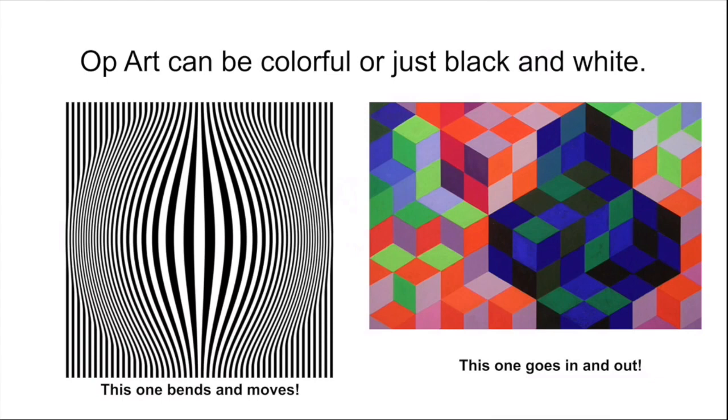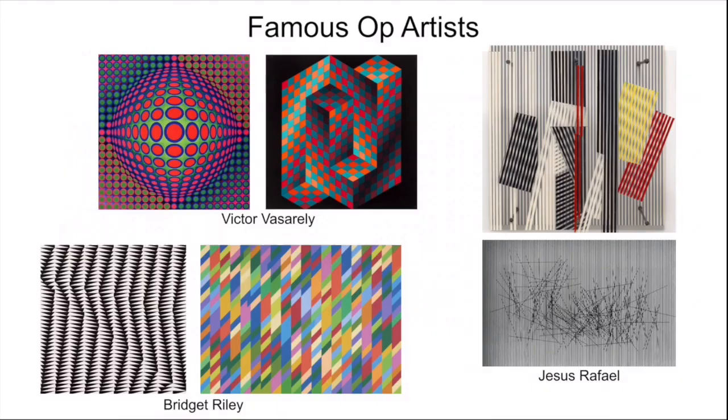Now, some famous artists of op art, or optical art. One of them is Victor Viserly. Victor Viserly was really good at playing tricks with our eyes, like all the op artists are. You can see that bulging ball thing that he did again. You can also see those cubes that kind of play on each other like that.